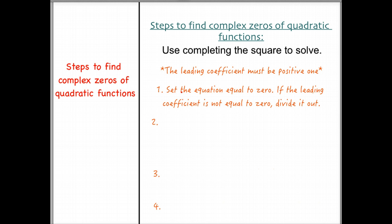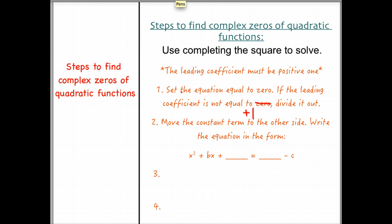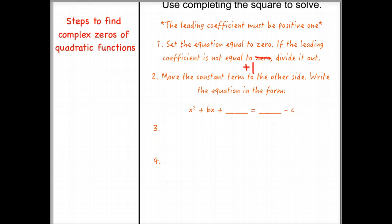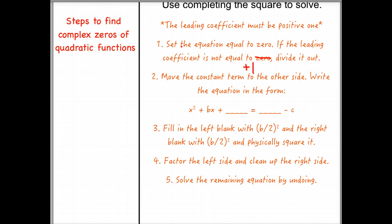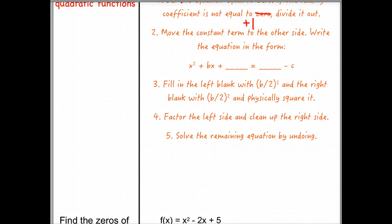The first thing you're going to do is set the equation equal to 0. If the leading coefficient is not equal to positive 1, divide it out. Then you move the constant term to the other side and write the equation in the form x squared plus bx plus blank equals blank minus c. The next thing we would do is fill in those blanks with b over 2 squared. Then we're going to factor the left side and clean up the right side, and then solve the remaining equation by undoing. So let's go through and practice that.